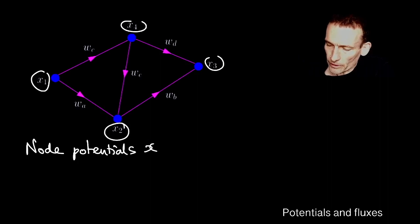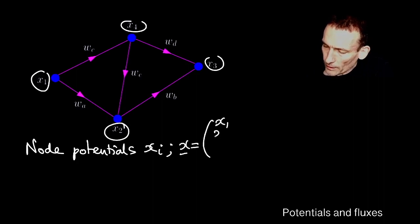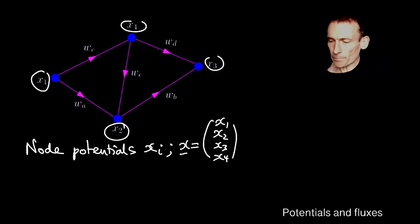Node potentials, and I can denote them by xi, where i is now an index, one, two, three, four, or equivalently, I can collect them into a four-dimensional vector x1, x2, x3, x4, and that will be my vector of node potentials, x. I'm going to call it x throughout the rest of the course.